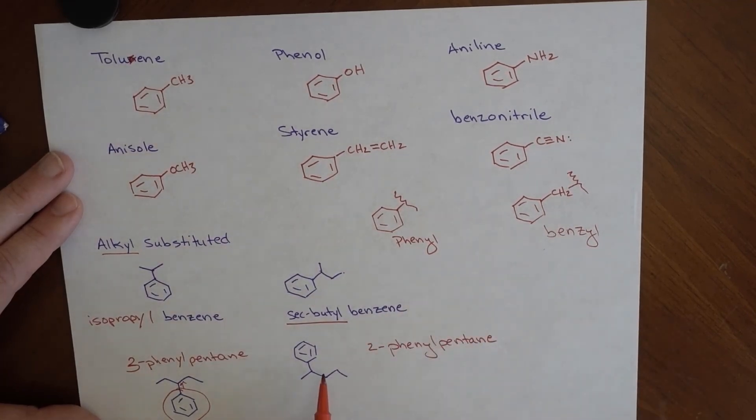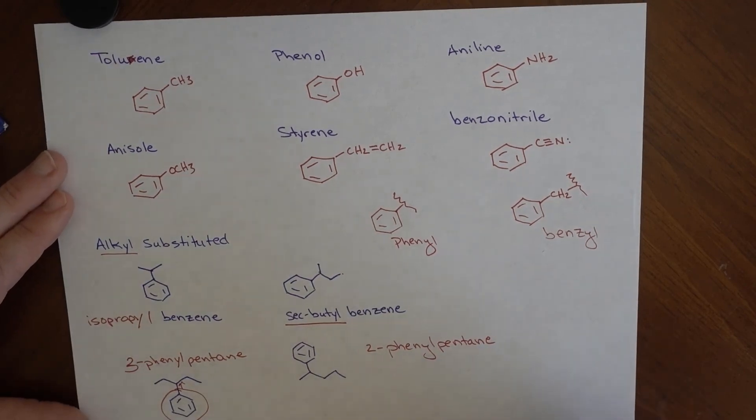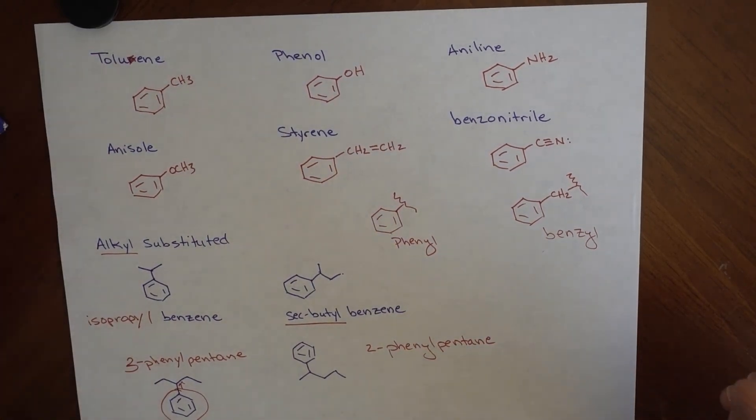Okay, so when the alkyl group can't be named with a single name, such as isopropyl, ethyl, something along those lines, then we end up saying that this phenyl is a group of that alkane. Okay? So in the next video we'll go over how to name dye and poly substituted benzenes.